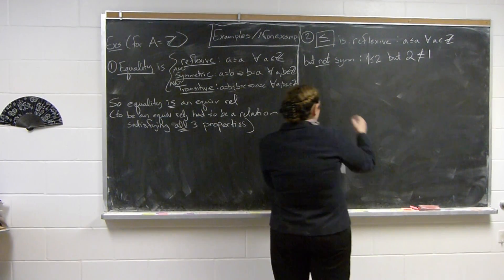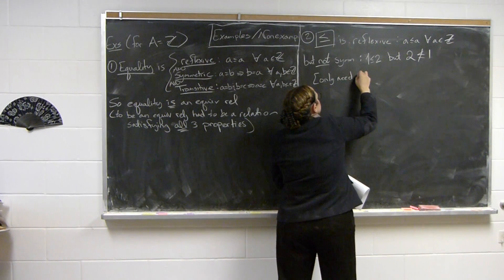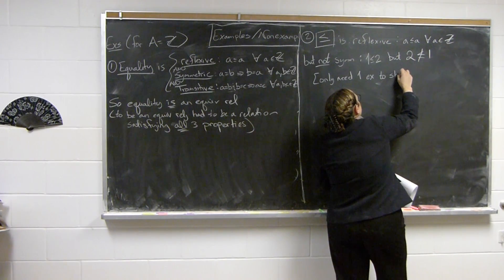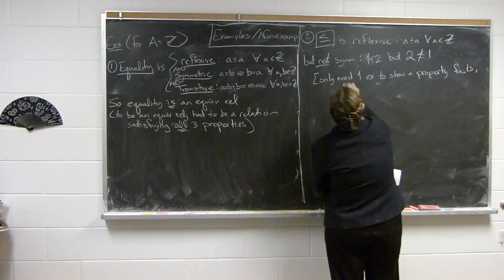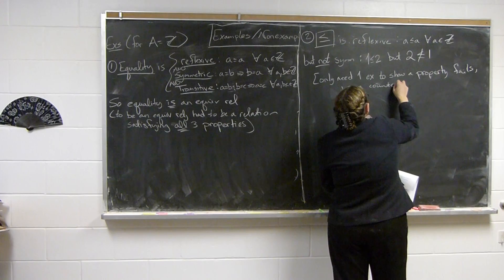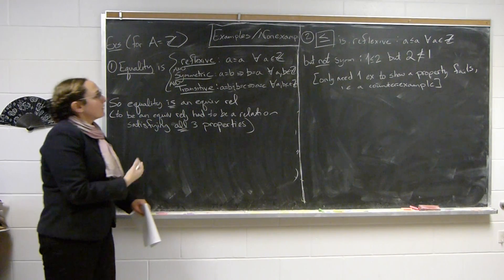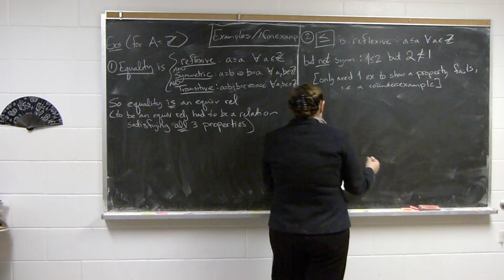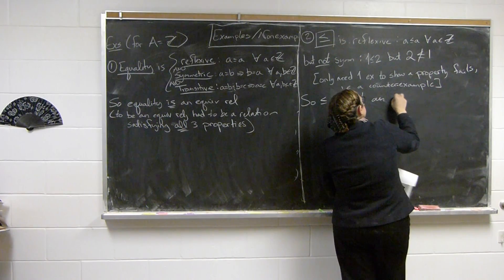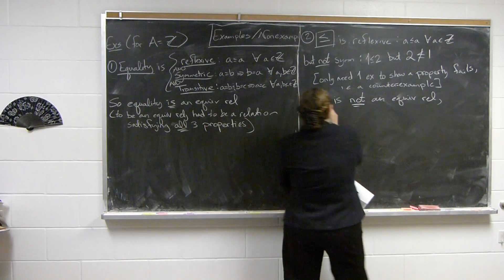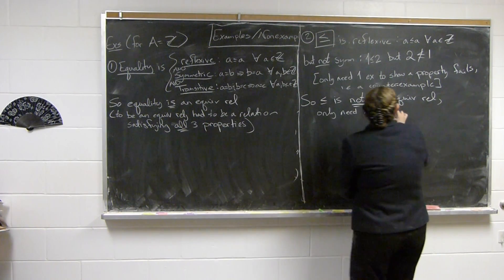So we only need one example to show a property fails. So I only needed one and two. And then also I only need one of those three properties to fail in order for a relation to not be an equivalence relation. So, less than or equal is not an equivalence relation. We only needed one of ER1 through ER3, one of symmetry, reflexivity, transitivity to fail.